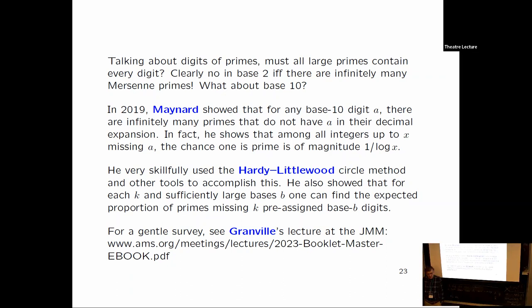Just a few years ago, James Maynard proved that for any, pick any base 10 digit you'd like, A, there are infinitely many primes in their decimal expansion that do not have an A in them. And the proportion of such primes is similar to taking the proportion of integers that don't have A near x and dividing that by log x. So this proof was not a recreational math type proof. It was a very difficult proof. He used the Hardy-Littlewood circle method.